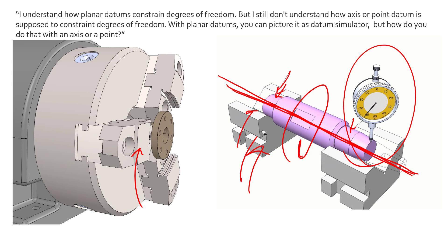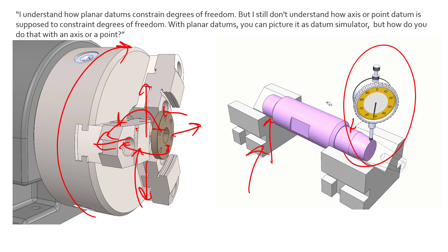As we've engaged our datum simulators, we cannot disengage them. We've stopped two degrees of translation and two degrees of rotation—around here and around here. What we haven't done until we've stopped sliding this part in is stopped translation in and out and stopped rotation about the axis. That's why a cylinder or an axis as a datum can control four degrees of freedom: two translations and two rotations.